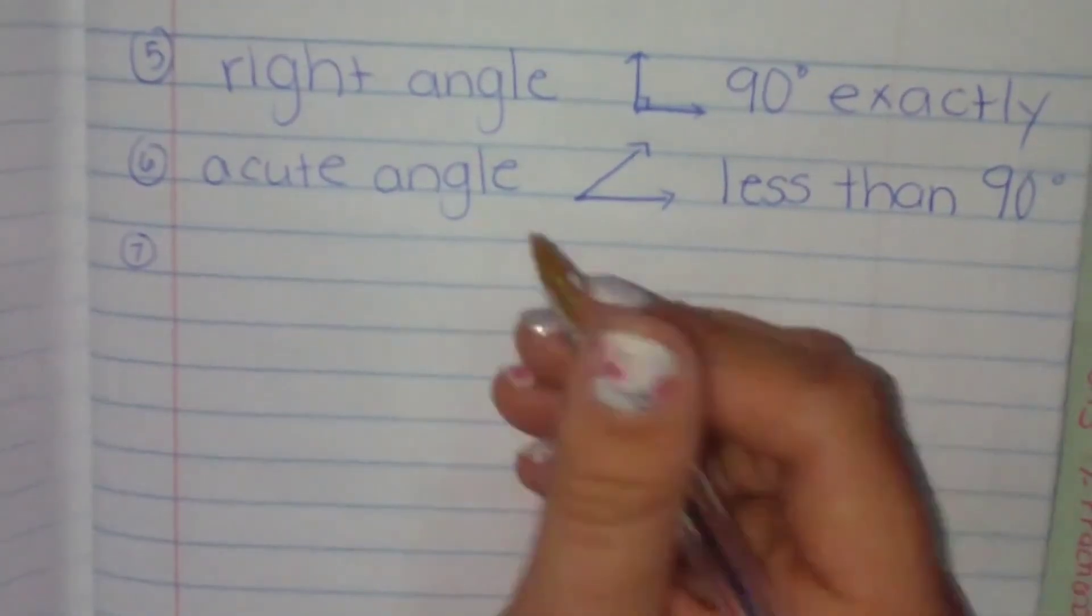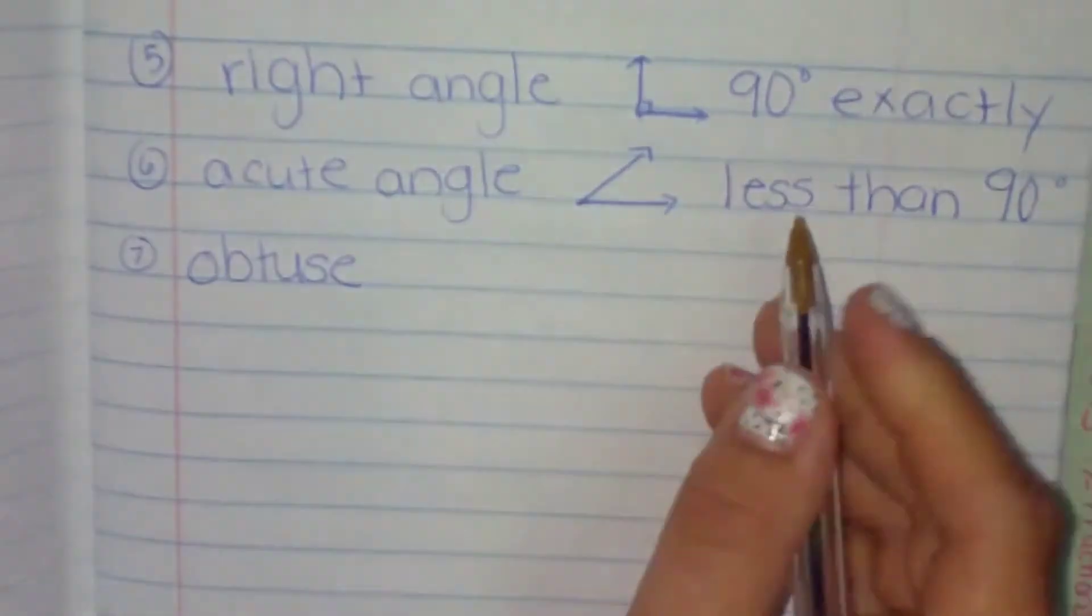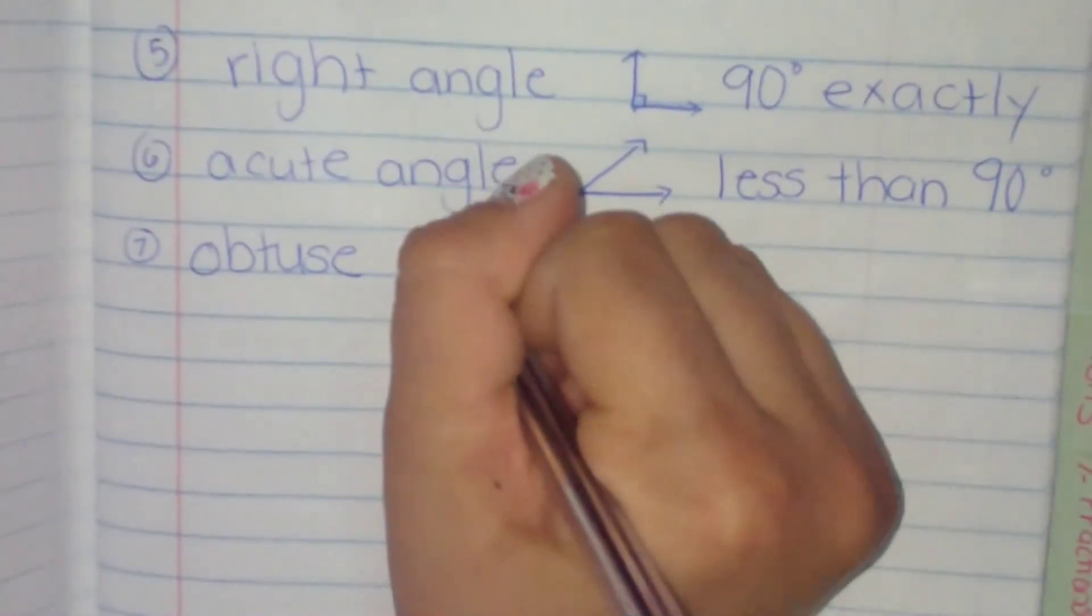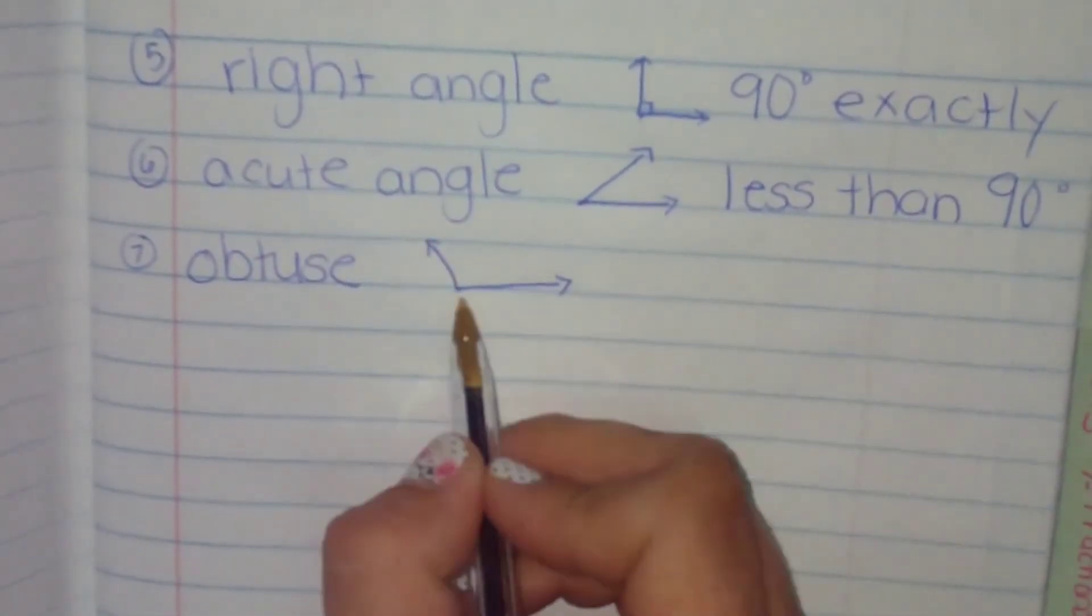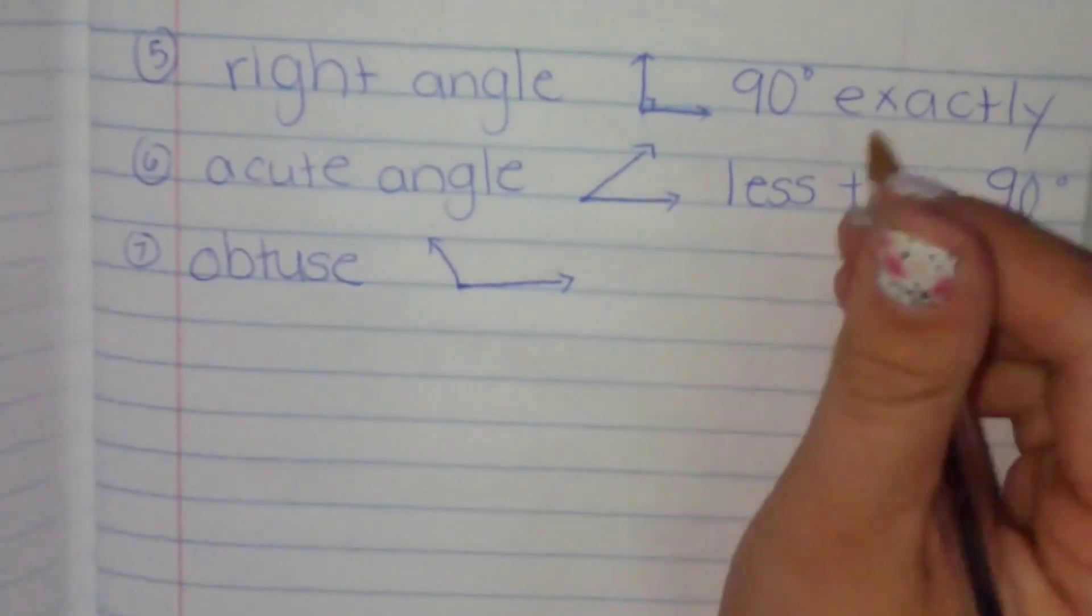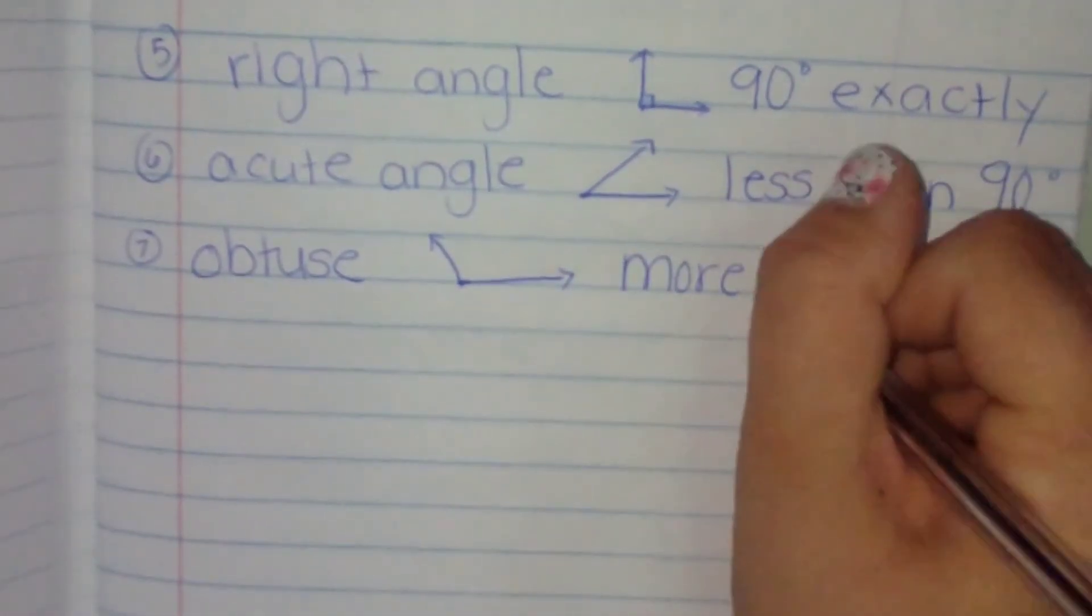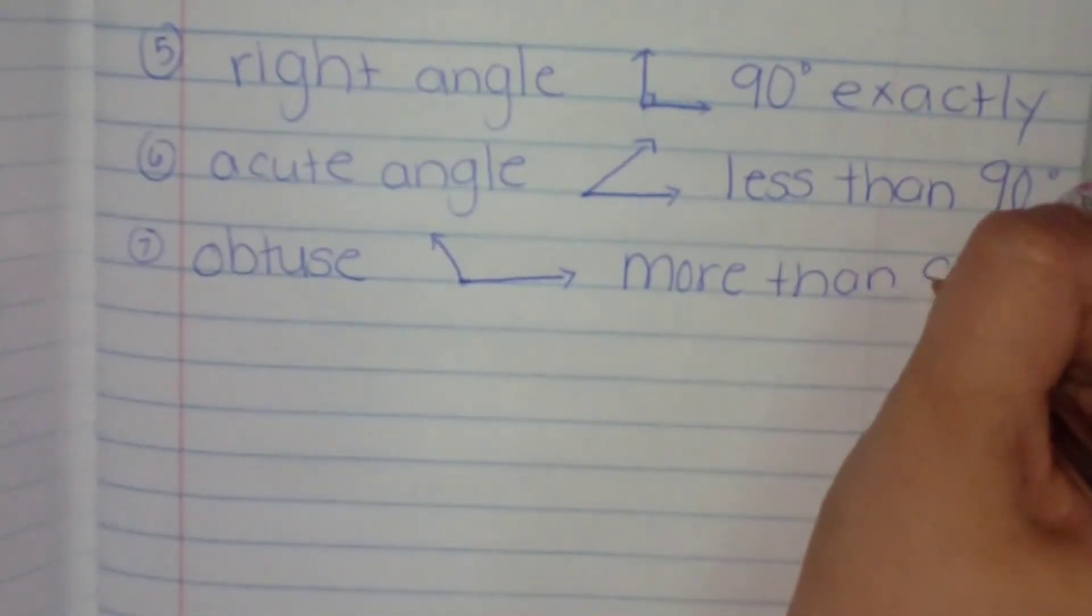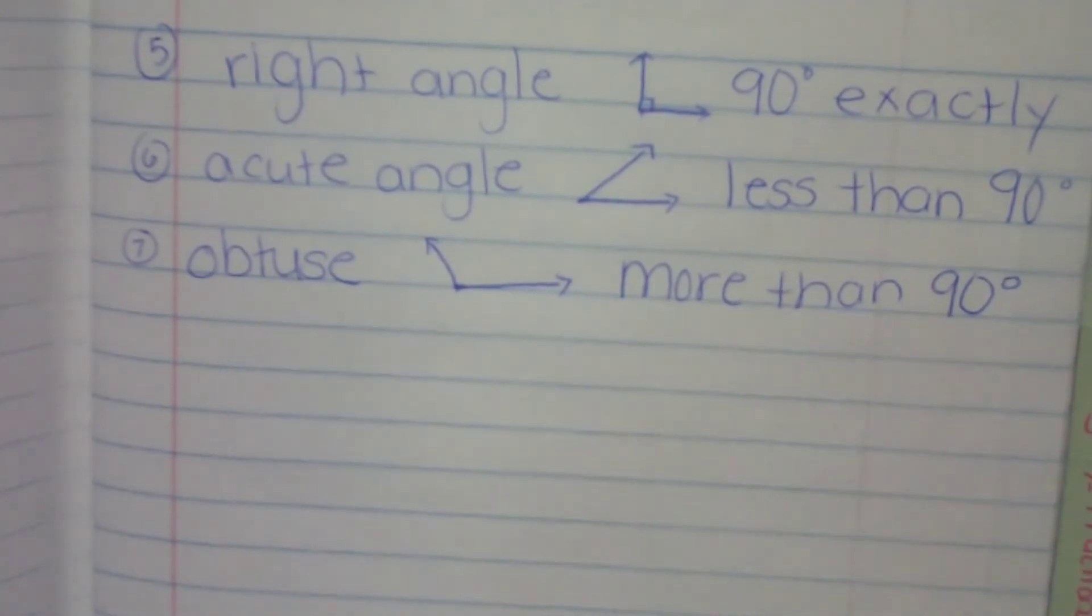Okay, so seven is obtuse. Obtuse is a line intersecting another line at one point, and it is more than 90 degrees.